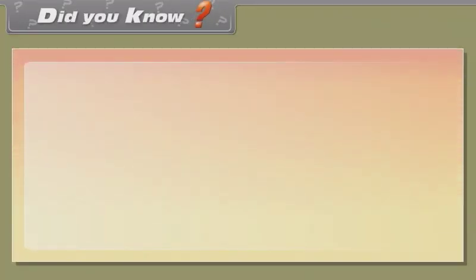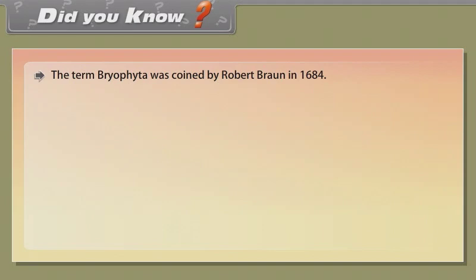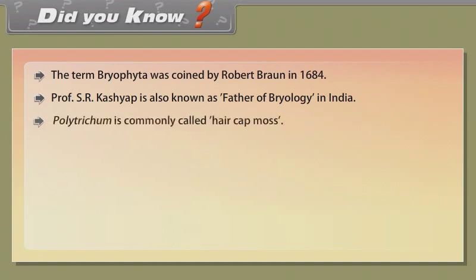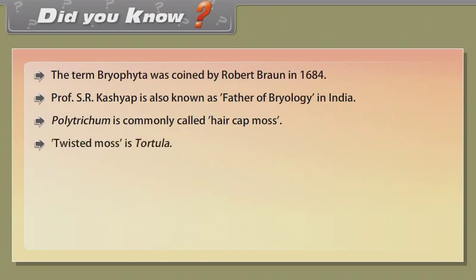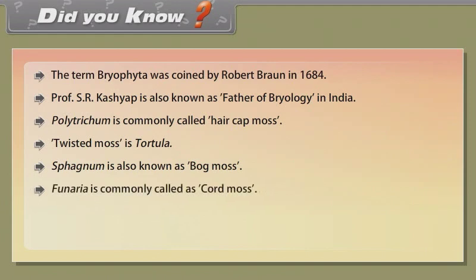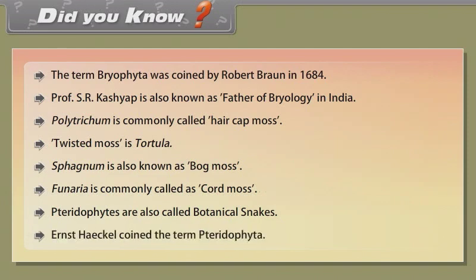Did you know, the term bryophyta was coined by Robert Braun in 1684. Professor S.R. Kashyap is also known as father of bryology in India. Polytrichum is commonly called hair cap moss. Twisted moss is tortula. Sphagnum is also known as bog moss. Funaria is commonly called as cord moss. Pteridophytes are also called botanical snakes. Ernst Haeckel coined the term pteridophyta.